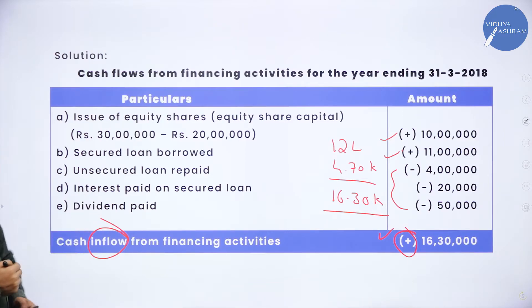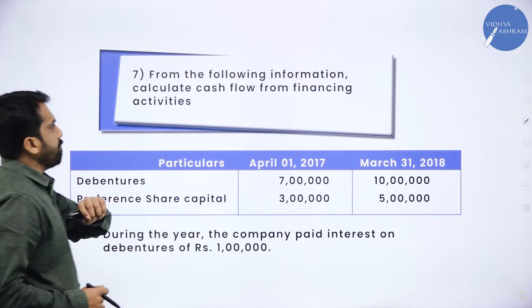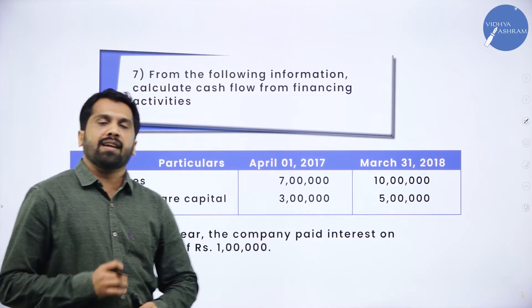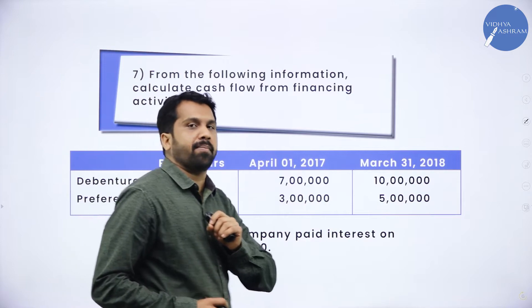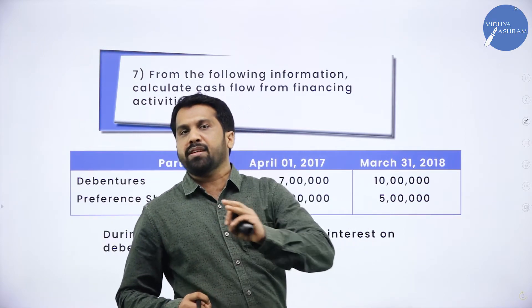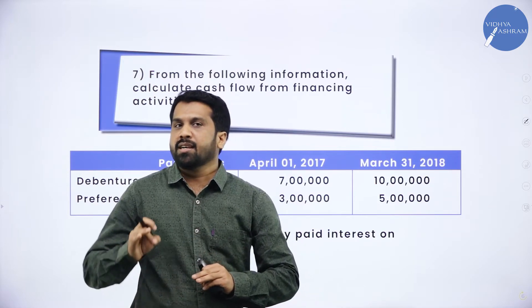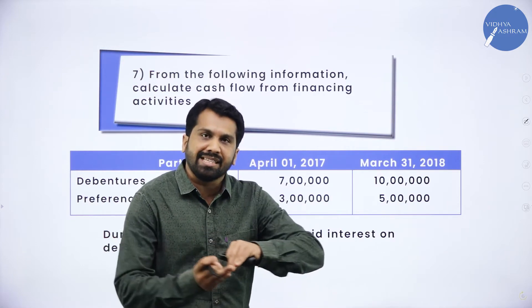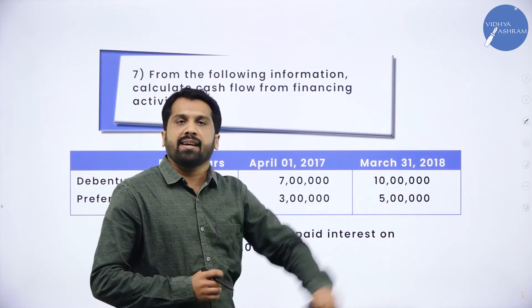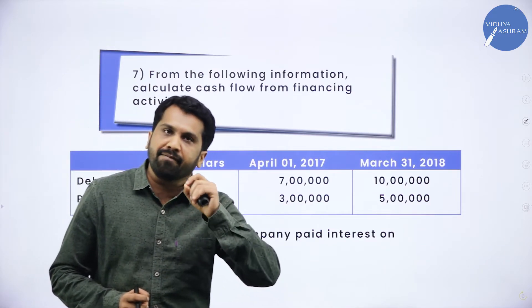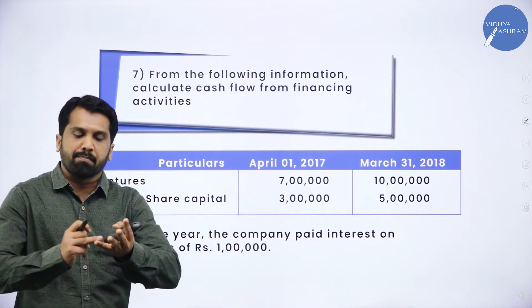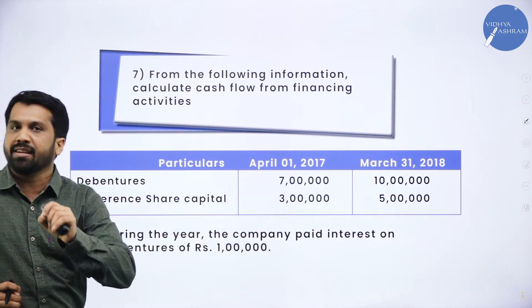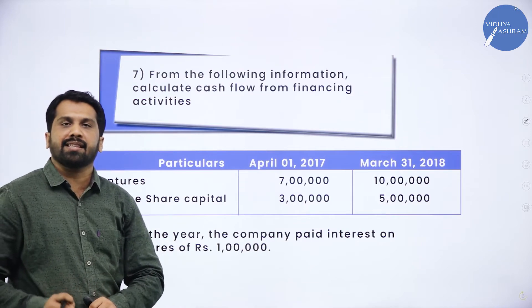We will go to the last problem for today. From the following information, calculate cash flow from financing activity. Remember, under financing activity: share capital — equity or preference — any loans, secured or unsecured, and debentures come under financing activity. What about investing activity? Assets like plant, goodwill, and furniture come under investing activity. Now we are doing financing activity.